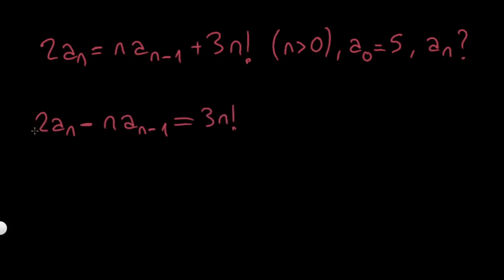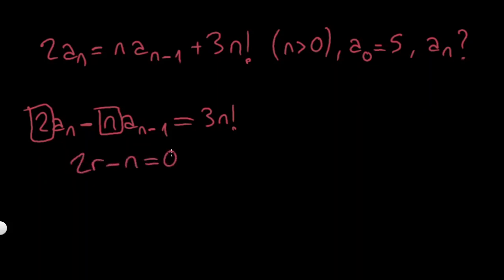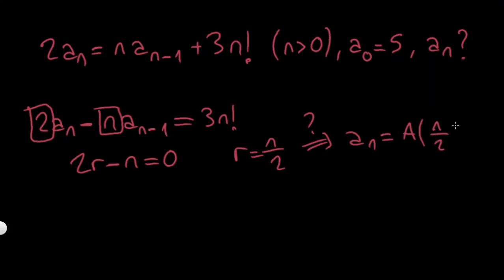So far we only learned the method when we have constant coefficients. Here I have 2 and minus n — well, 2 is constant but n is not a constant. It depends on n; our sequence depends on n. If you tried to make a characteristic polynomial of it you would end up having 2r minus n equals 0, giving an r dependent on n. You would say my solution is a_n equals a times (n/2)^n — no, it doesn't make sense. So we can't use this method.